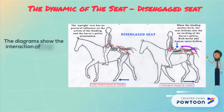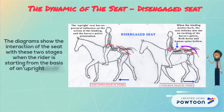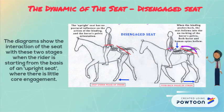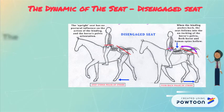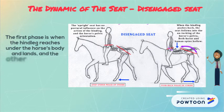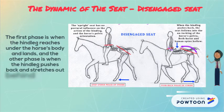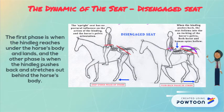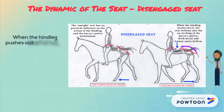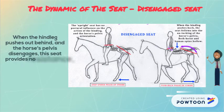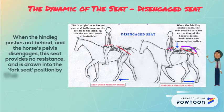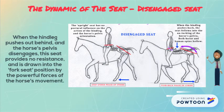The diagram shows the interactions of the seat with these two stages when the rider is starting from the basis of an upright seat where there is little core engagement. The first phase is when the hind leg reaches under the horse body, and the other phase is when the hind leg pushes back and stretches out behind the horse's body. When the hind leg pushes out behind and the horse's pelvis disengages, this seat provides no resistance and is swung into the front seat's position by the powerful forces of the horse's movement.